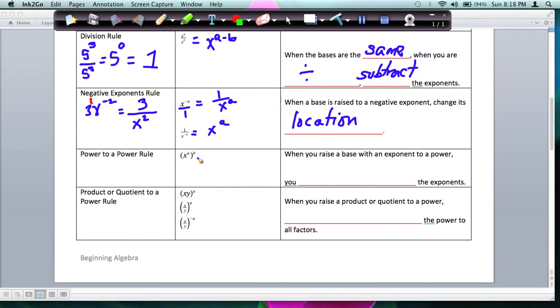Power to a power rule says when you're raising an exponent to a power, you multiply. So this would be a times b. So when you raise a base with an exponent to a power, you multiply the exponents. And what you need to be careful about is if you have a number, so let's just do an easy one. If I have 2x squared raised to the second power, you can't forget to raise that 2 to the second power as well. So this would be 2 to the second power, and then x, 2 times 2 is 4. And then just simplify, 2 squared is 4.